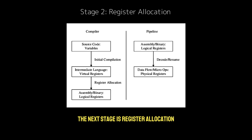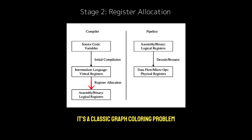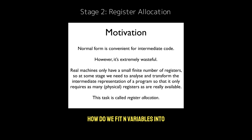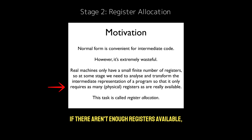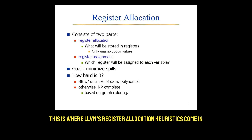The next stage is register allocation. LLVM IR uses an infinite number of virtual registers, but real CPUs don't have infinite registers — this stage maps virtual registers to physical hardware registers. It's a classic graph coloring problem: how do we fit n variables into m registers without spilling them into memory? If there aren't enough registers available, we spill some variables into memory, which comes with a performance cost. This is where LLVM's register allocation heuristics come in.